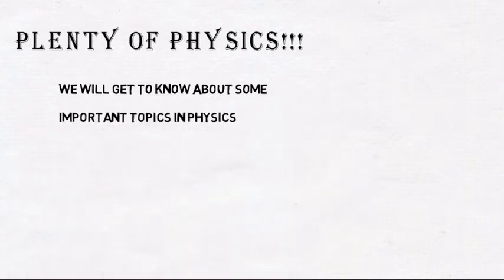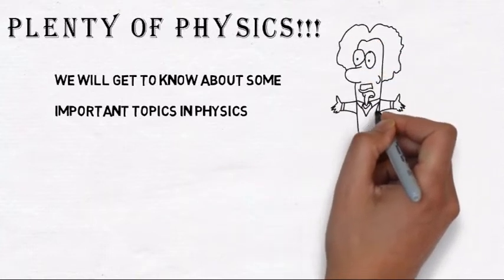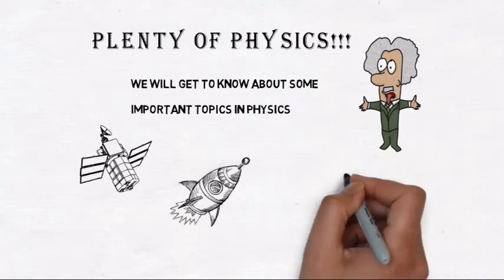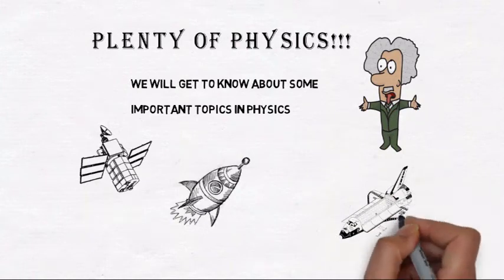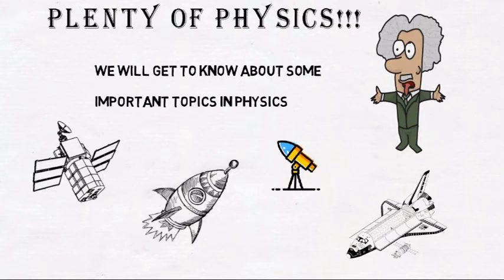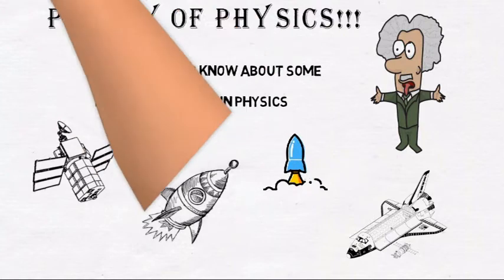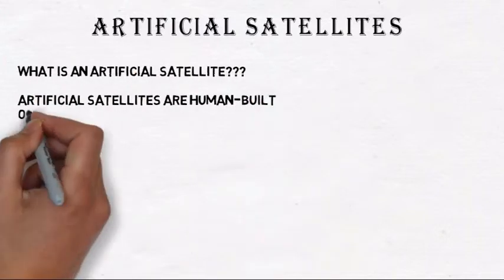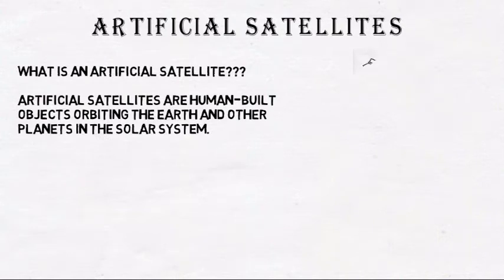We will get to know about some important topics in physics. Artificial satellites: What is an artificial satellite? Artificial satellites are human-built objects orbiting the earth and other planets in the solar system.